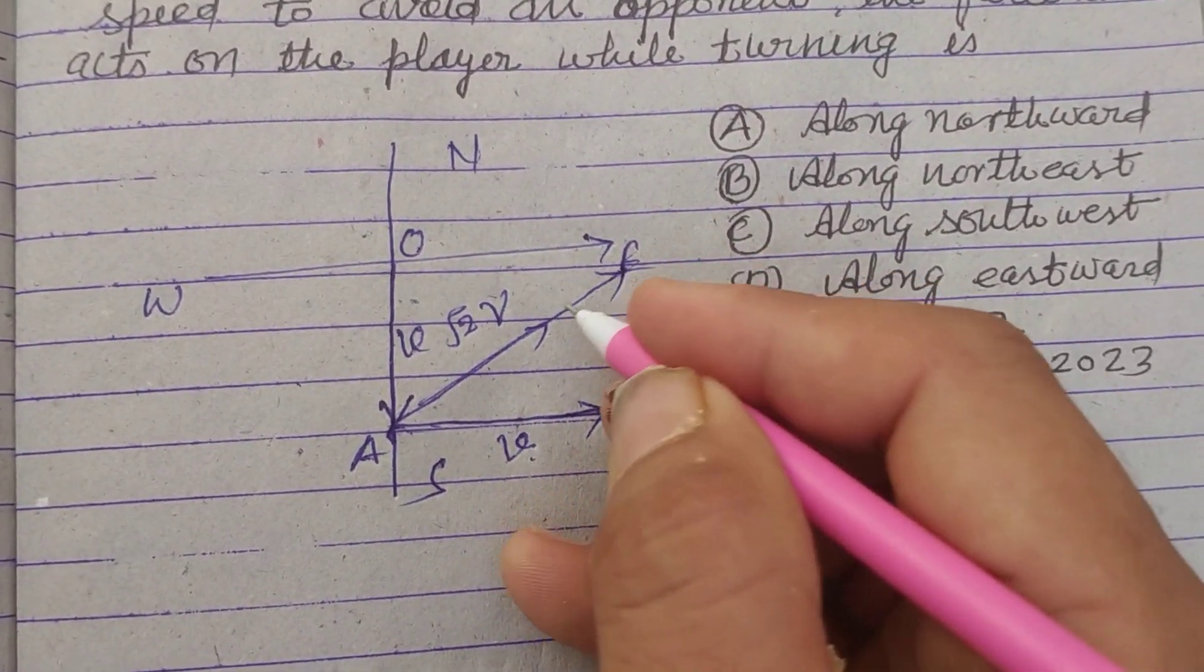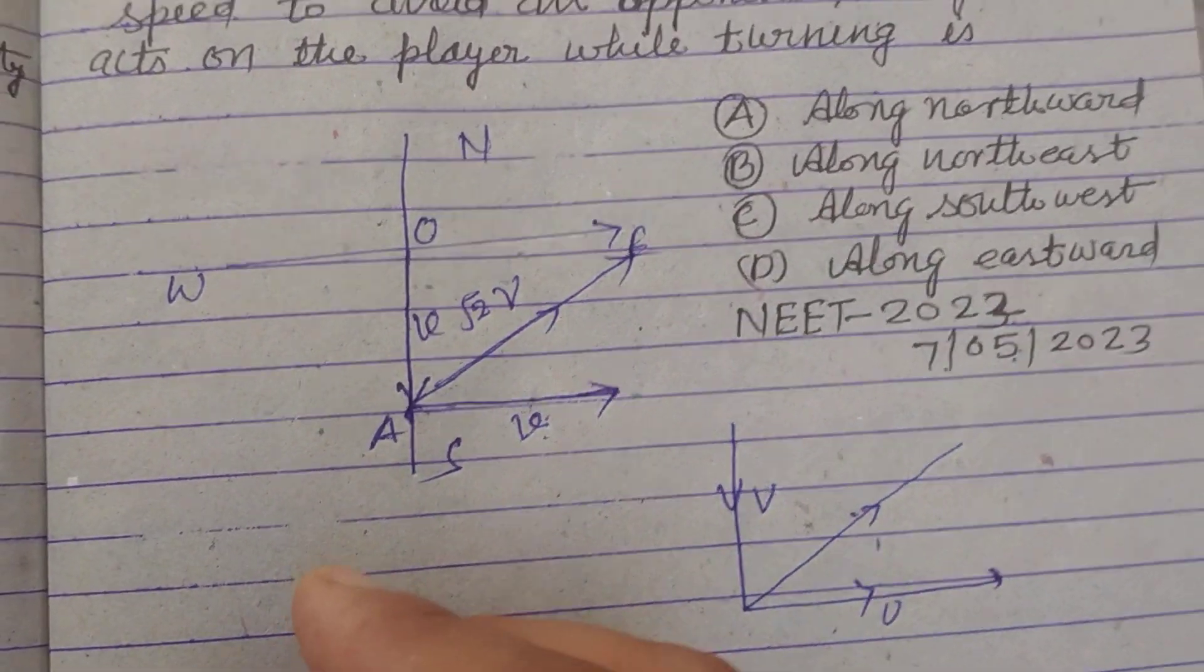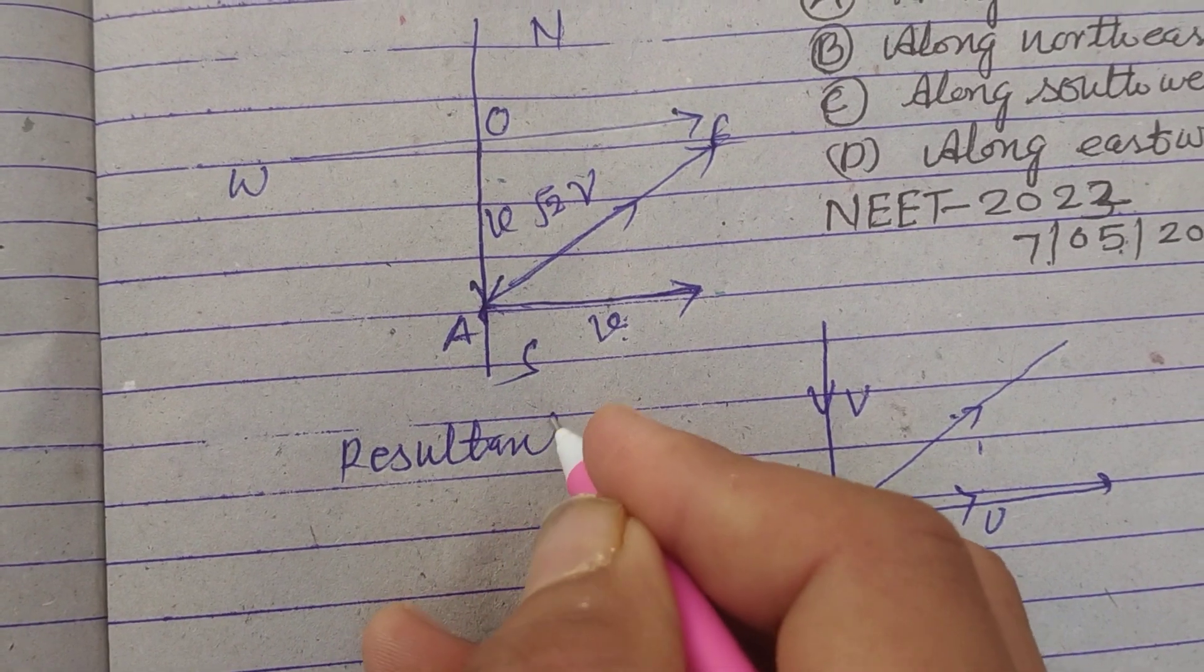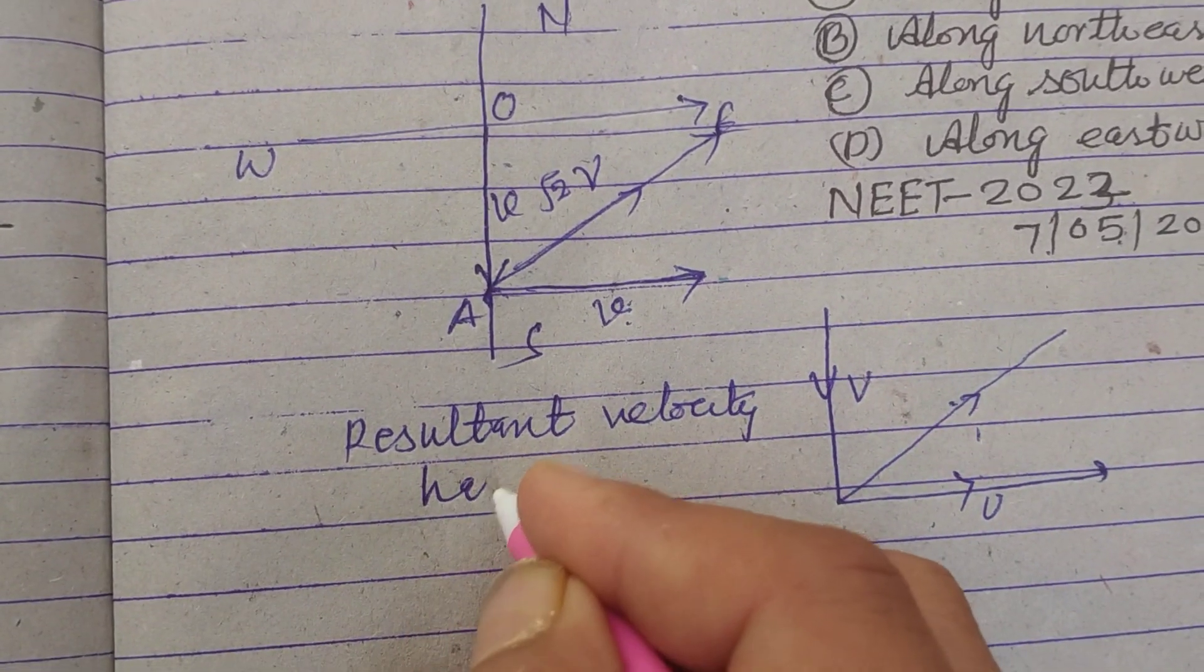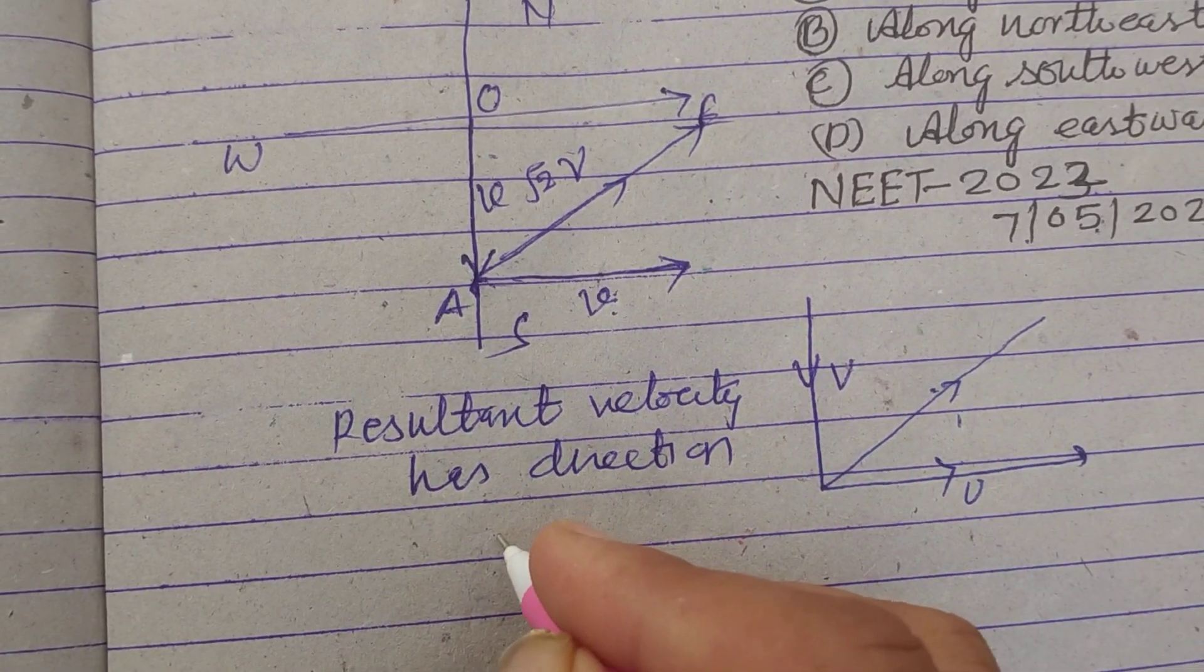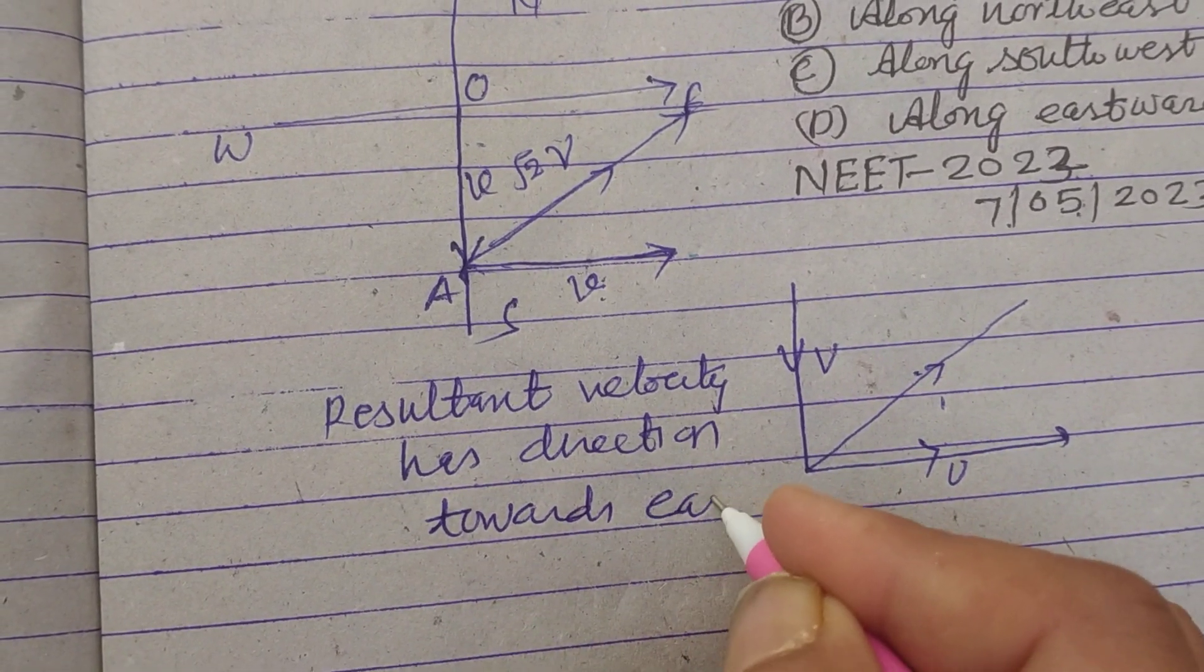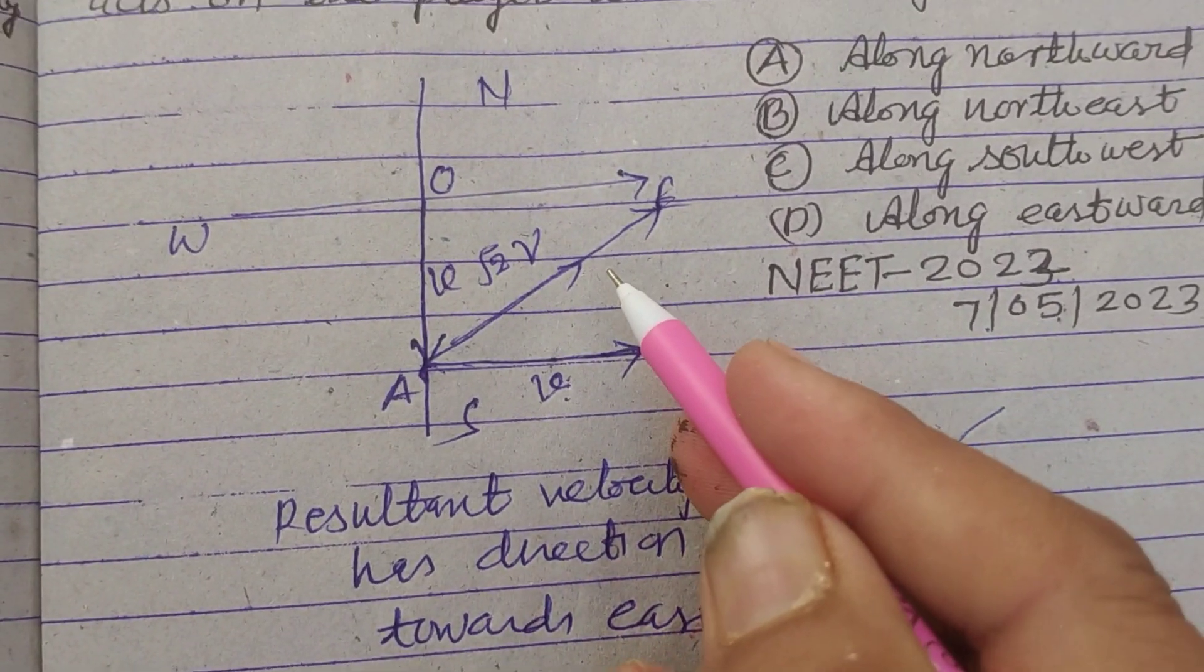And its direction, into which direction? It is east and north. So resultant velocity has direction towards east, north, or northeast.